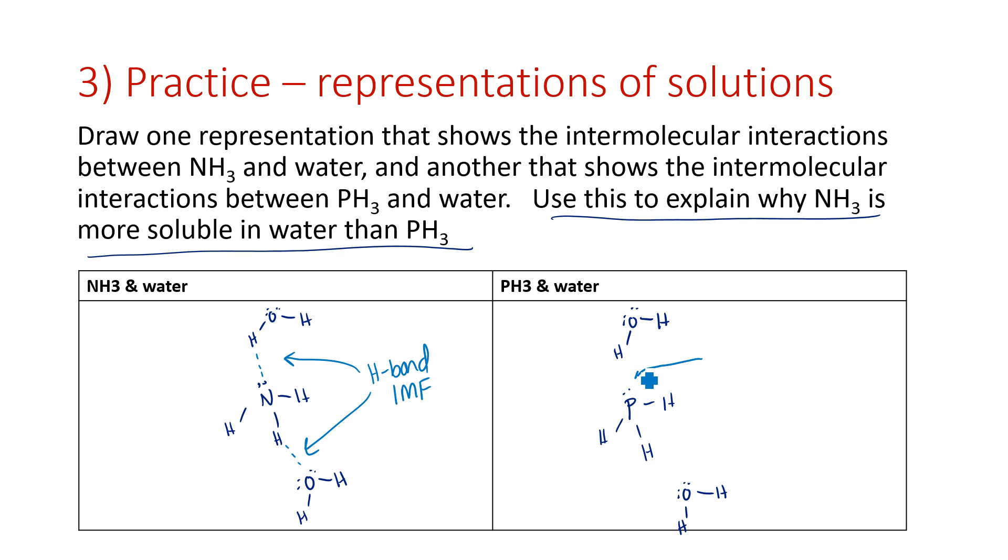Over here, this hydrogen is capable of hydrogen bonding, but this is a phosphorus. It's not an ONRF. So this is not a hydrogen bond, but it's still polar. So it's a dipole-dipole force. And same thing down here. This hydrogen is not capable of hydrogen bonding because it's bonded to a phosphorus rather than an ONRF. So that's a dipole-dipole IMF.